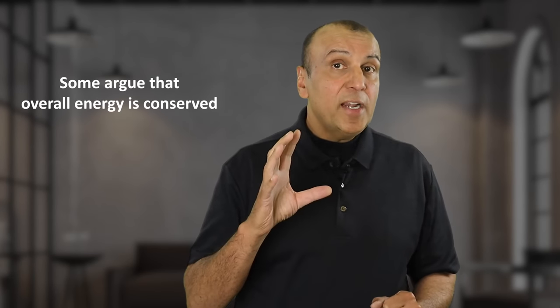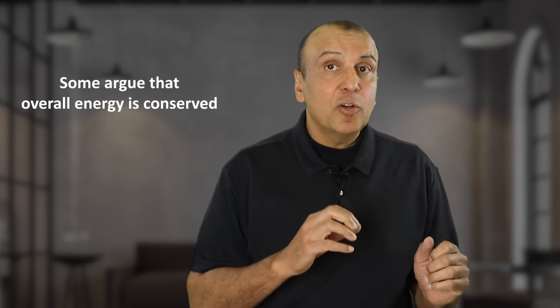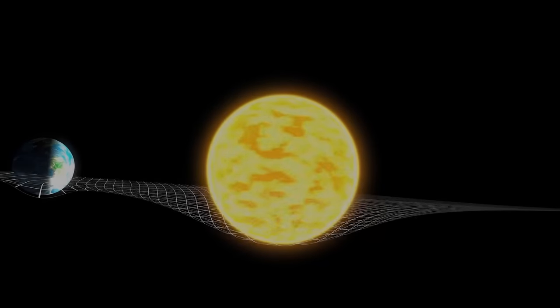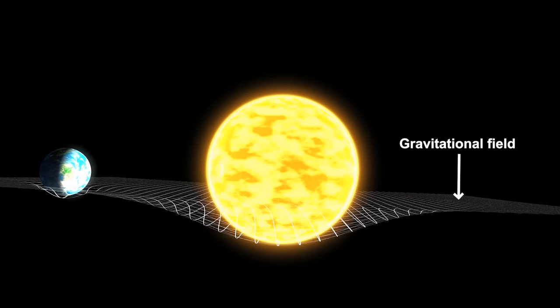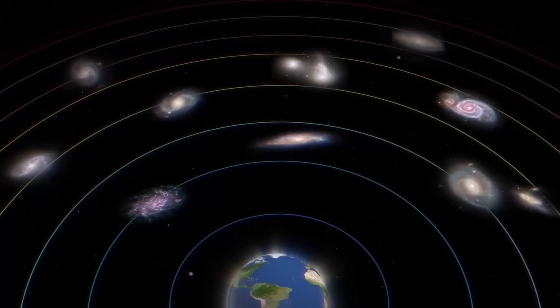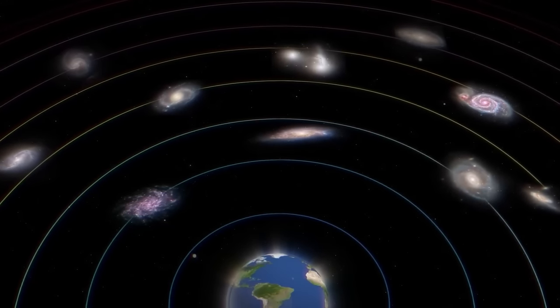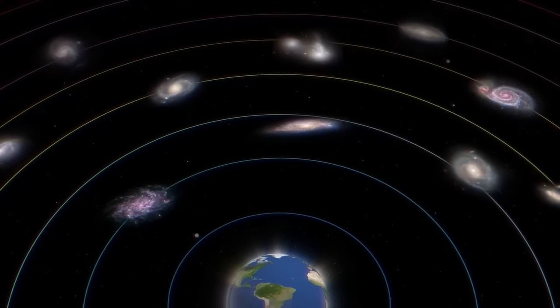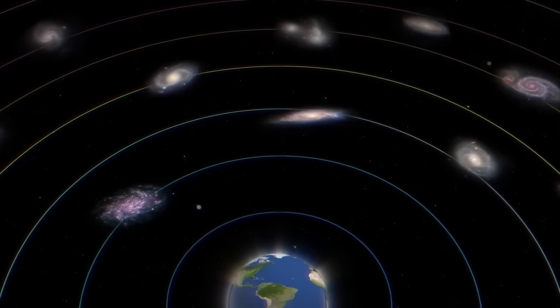I must point out that some experts believe that overall energy is conserved in an expanding universe because they argue, you have to include the energy of the gravitational field along with the energy of the matter and radiation. In other words, as distances between objects increase, the increasing gravitational potential between them can be thought of as a kind of negative energy. How the heck is this considered negative energy?